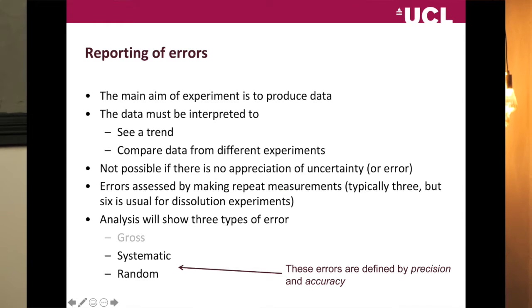Systematic and random errors, on the other hand, are really important and they relate to precision and accuracy. One of the key things you might get out of this lecture is being able to look at a set of data and determine: are the errors systematic or random? If you can do that, it tells you something really important about the experiment itself and the person who did it — because it might not be you, it might be someone presenting you data. This allows you to go back and ask informed questions.